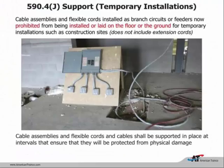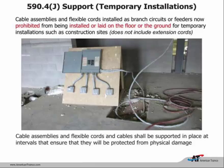Article 590 covers temporary installations. On construction sites, cable assemblies are now prohibited from being installed or laid on the floor during the construction period. We're going to have to secure those cables up off the floor, support them, and make it safe for people to walk through the construction site.